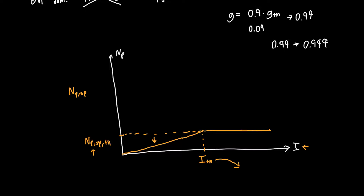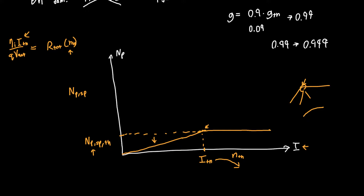We can use the carrier rate equation to determine the threshold current: we plug the threshold carrier density into our recombination equation — injection current over q times the active region volume equals total recombination as a function of carrier density. Plugging in the threshold carrier density gives the threshold current. This is actually a smooth transition, not a sharp corner, but when plotted it looks fairly sharp, like a kink. If you zoom in enough, you see it's really a continuous transition, so it's a little deceptive to call this a real kink.